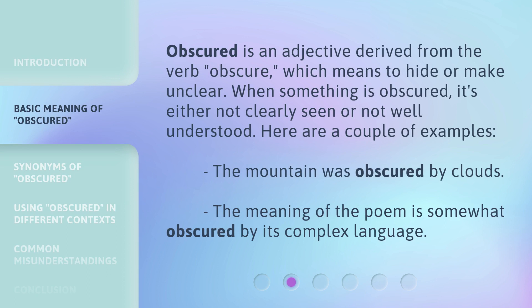Obscured is an adjective derived from the verb obscure, which means to hide or make unclear. When something is obscured, it's either not clearly seen or not well understood. Here are a couple of examples: the mountain was obscured by clouds; the meaning of the poem is somewhat obscured by its complex language.